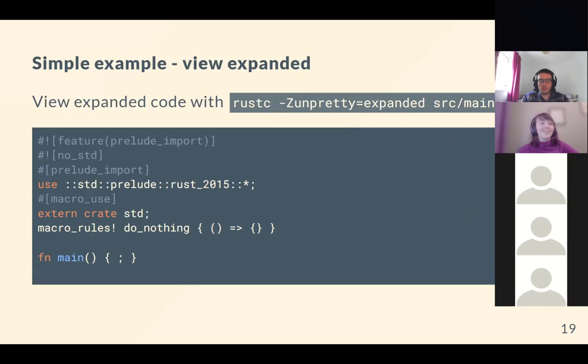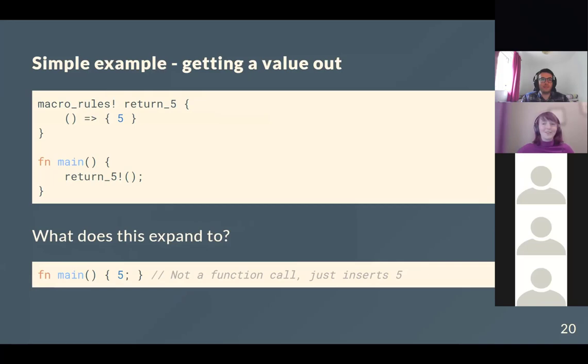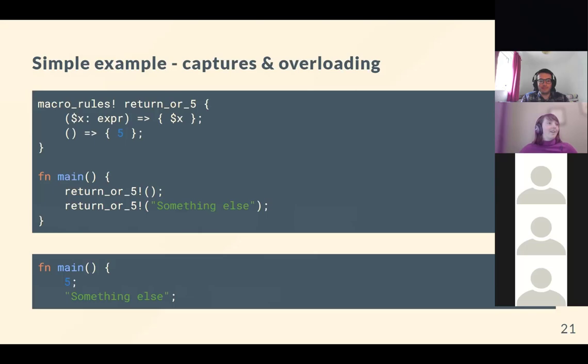A slightly more complex example still matches on nothing but returns five. When expanded, it just puts a five in — it's not doing a function call or any misdirection, just substituting the literal five directly into place.